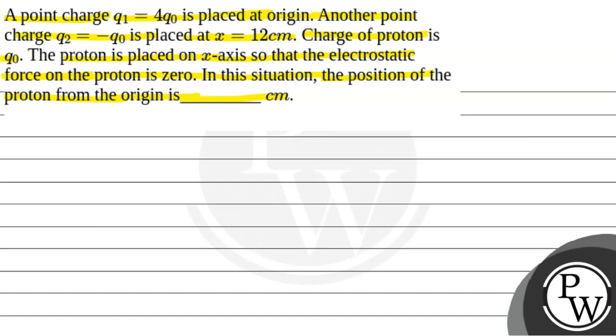So now we simply say that we believe this is origin. Q1 is placed here. This is where Q1 is placed, which has charge 4Q0. Now, the charge minus Q0 is placed here, and the distance between them is on the x-axis.